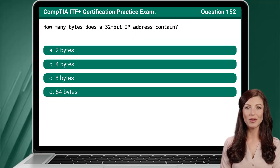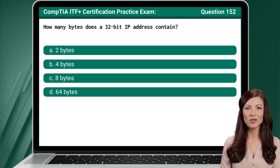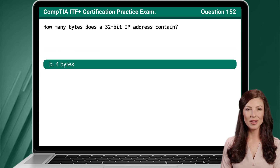Question 152. How many bytes does a 32-bit IP address contain? The answer is B — 4 bytes.